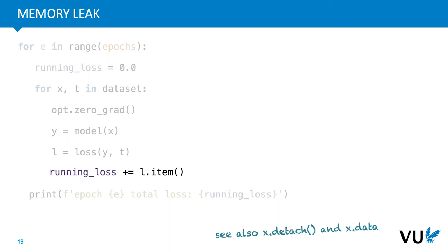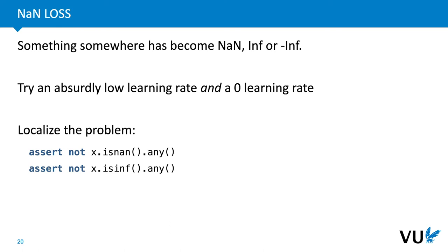Once we have a running model and start training, a very common problem is NaN loss — not-a-number loss. Somewhere in the computation graph something becomes NaN, infinite, or negative infinite, and after that everything else quickly becomes NaN too. The first place we see this is usually in the loss. This might not actually be a model problem — it may simply be that the learning rate is too high, which often leads to values becoming infinite. The first thing to try is a very low learning rate or even a zero learning rate. If that doesn't solve it and the network still runs out of control, use asserts to localize the problem.